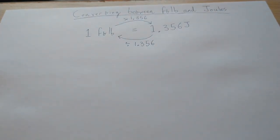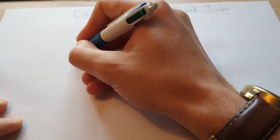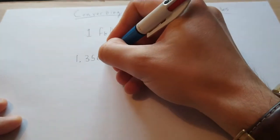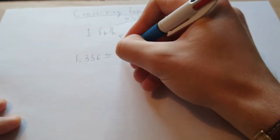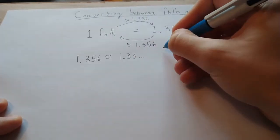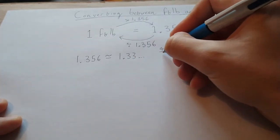However there is something rather sneaky we can do here. Say you're trying to do this conversion quickly in your head. What we can actually say is that 1.356 is near enough 1.33 recurring, otherwise known as 4 over 3.